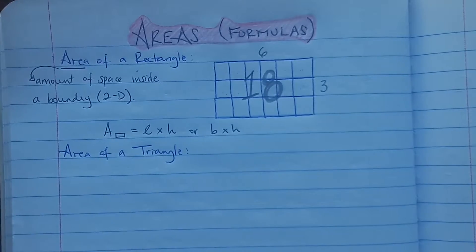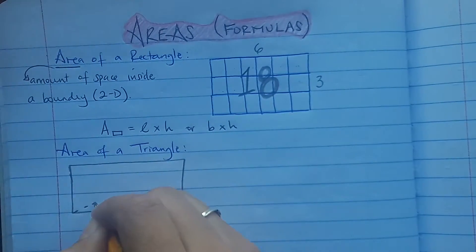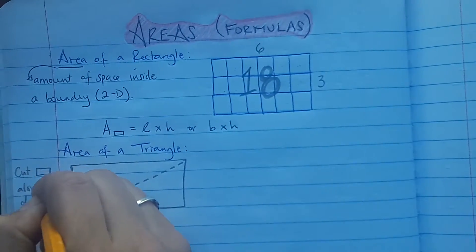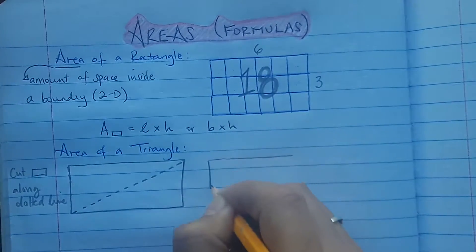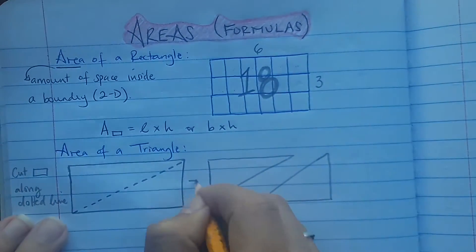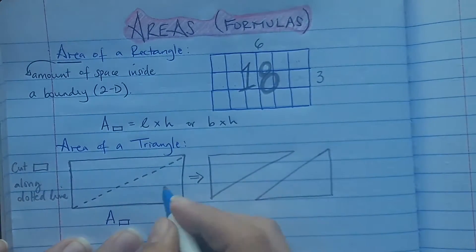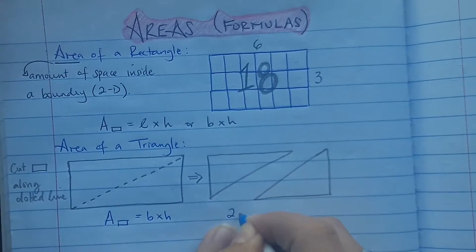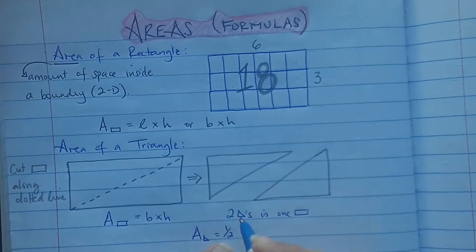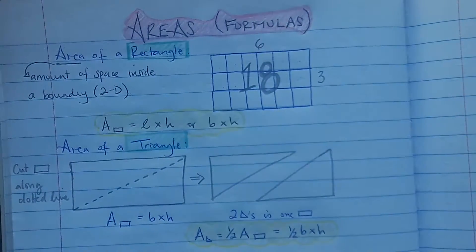Let's take a look at the area of a triangle. What you do is start off with a rectangle, which we know is base times height, and then cut along a dotted line. That gives us two separate but equal triangles. So if the area of a rectangle is base times height and that same rectangle has become two triangles, then the area of one triangle is half the area of a rectangle, which is one-half base times height. And that's how you get the formula for the area of a triangle.